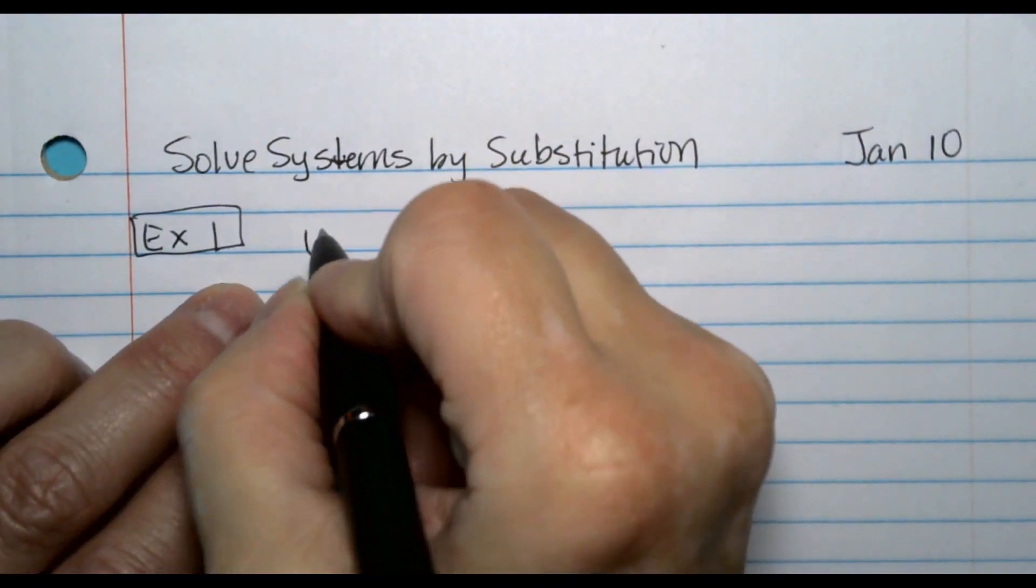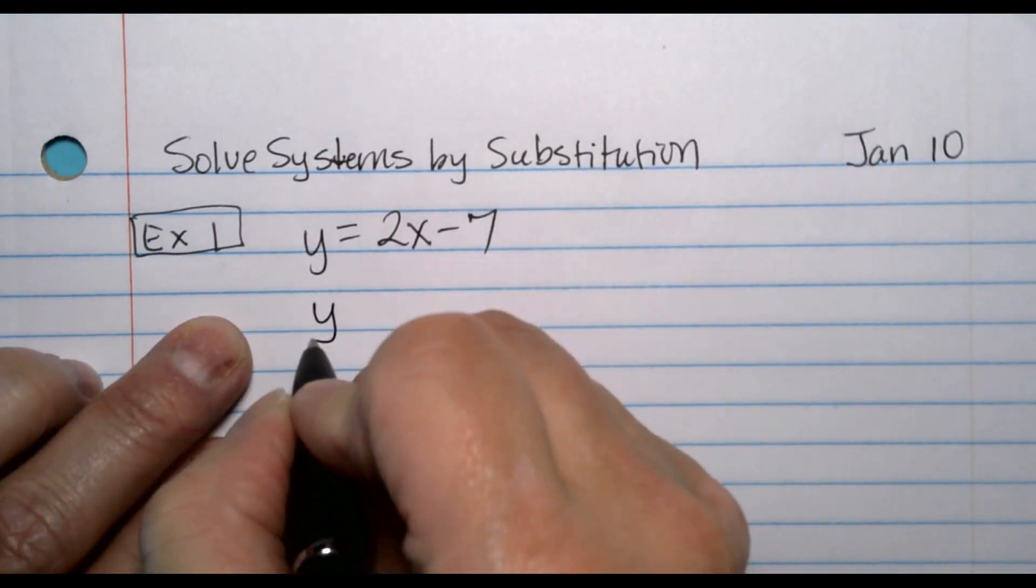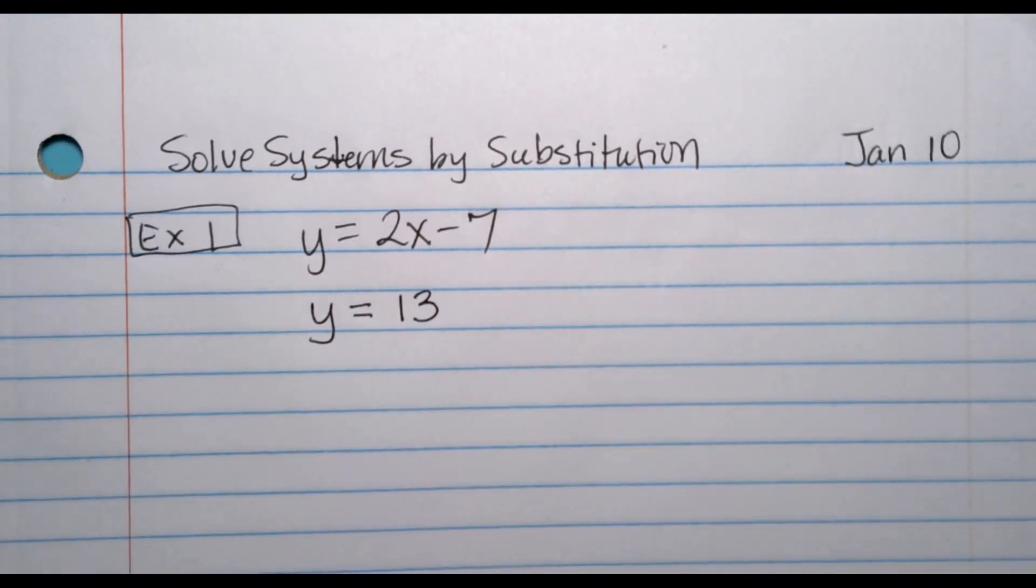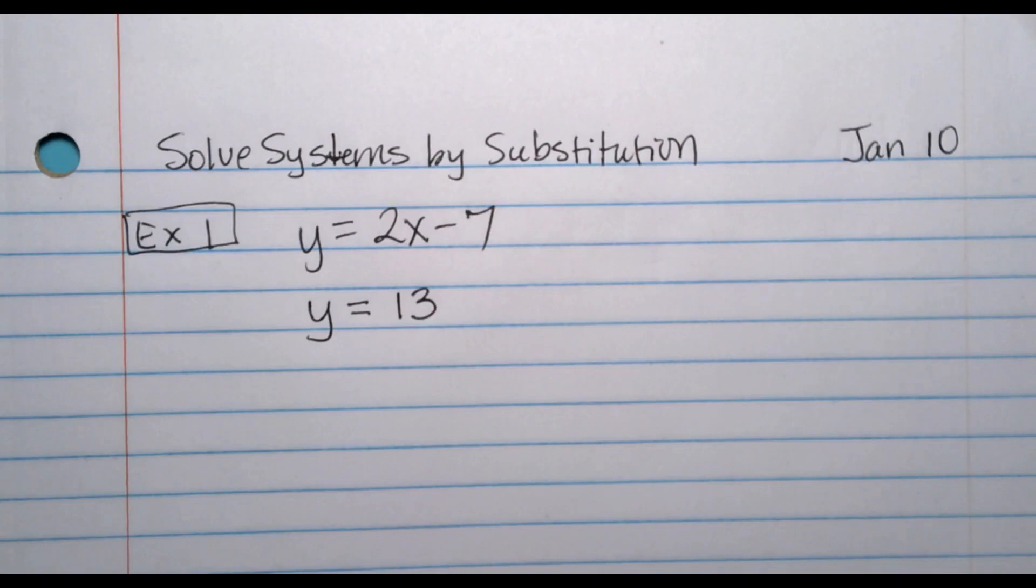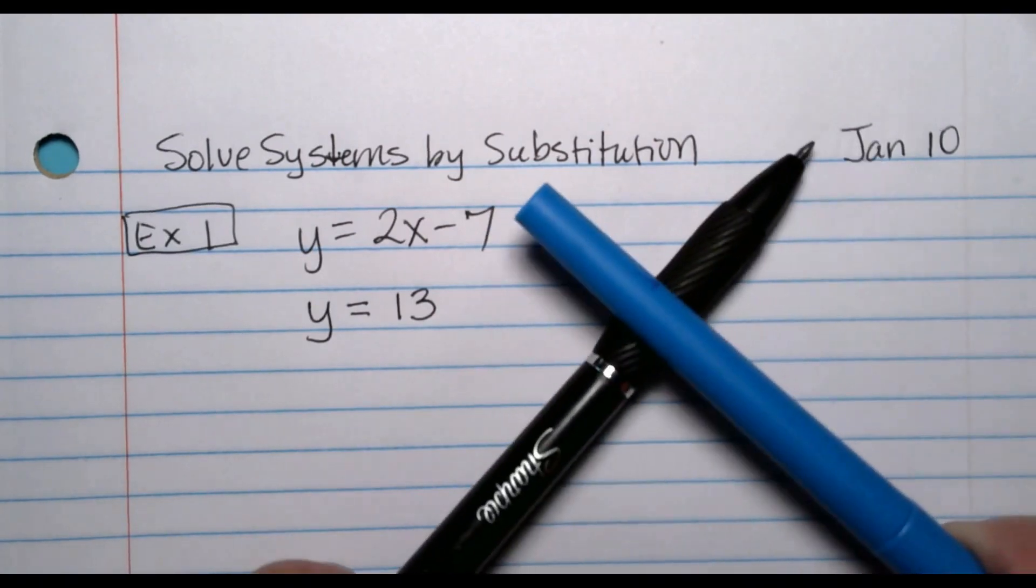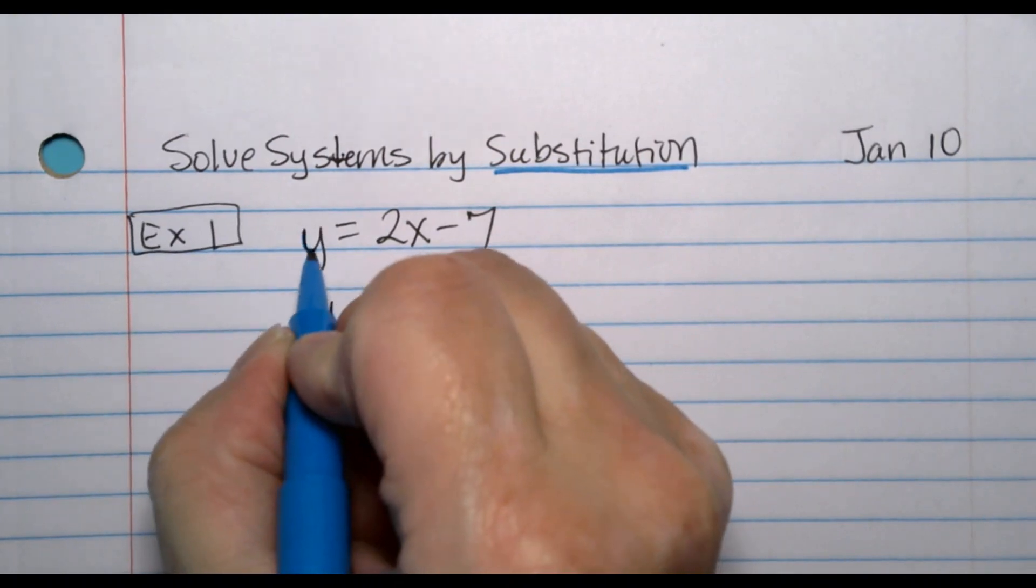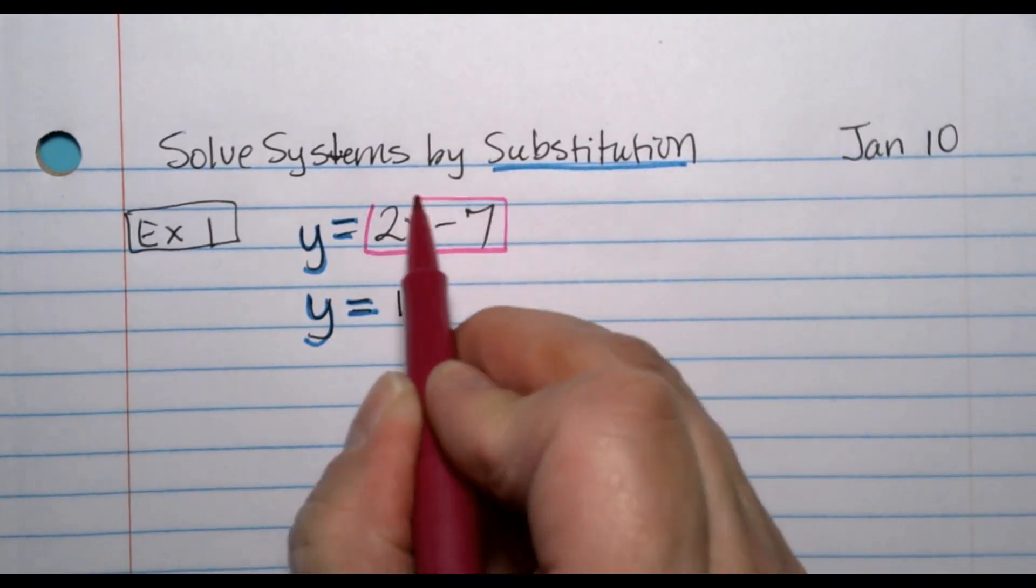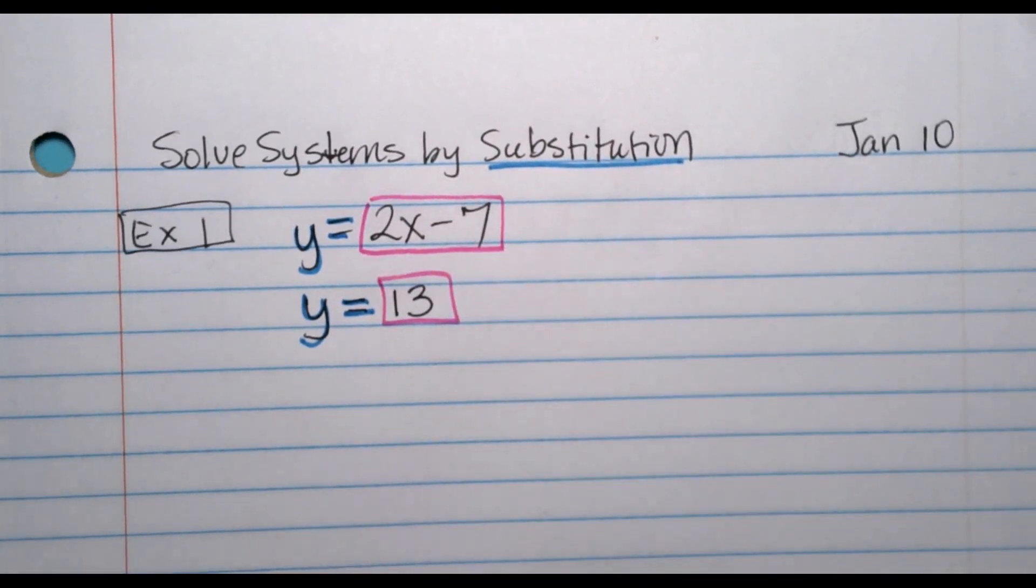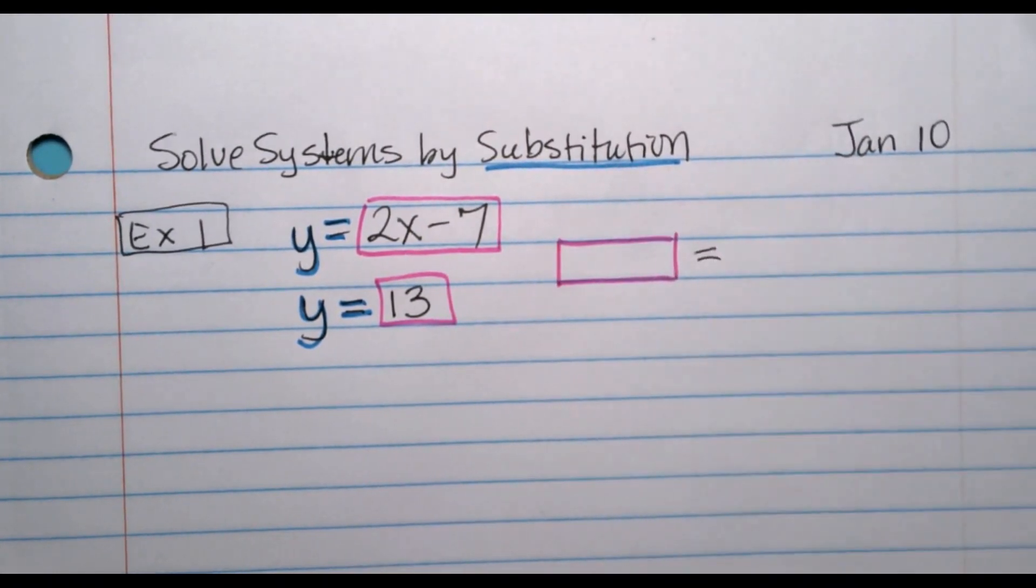A system where I say y equals 2x minus 7 and y equals 13. Super simple system where one of the equations actually looks like an answer to something, but it is a system of equations. If we graphed it, those two would cross somewhere, and where they cross is our answer. But there's ways to find that without actually drawing it out. We're going to be using substitution.